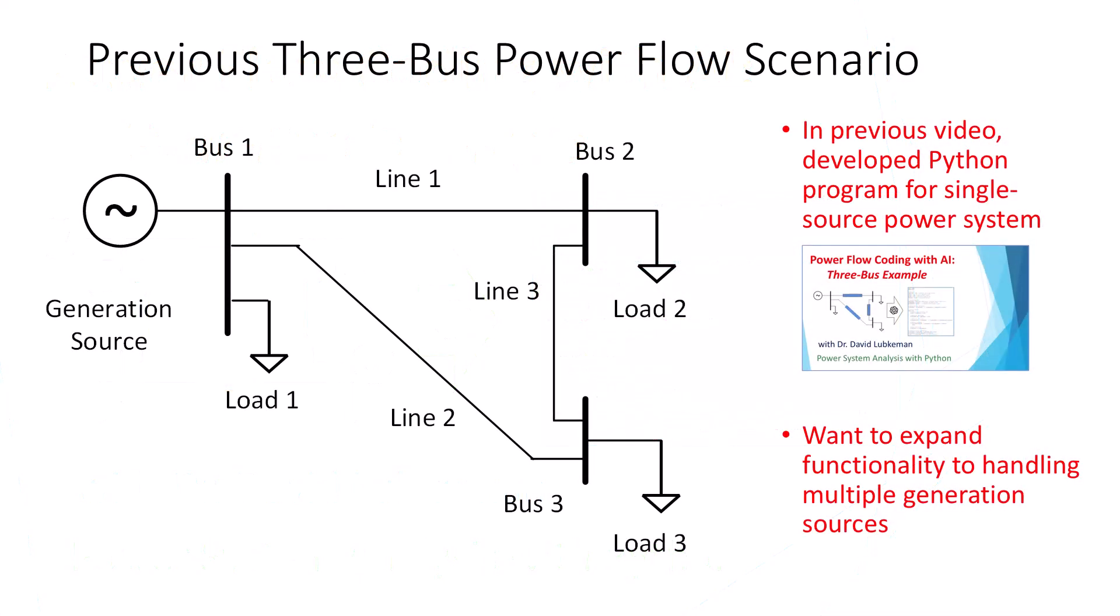Before we start on the 4-Bus example, I will quickly review what was developed in the previous video on a 3-Bus scenario, as shown here. We have a single-source system consisting of constant power bus loads, all interconnected via transmission lines. Although we focused on this 3-Bus example, the PowerFlow code could handle larger systems as long as we just had the single source. In this video, we expand the PowerFlow functionality to handling multiple generation sources.